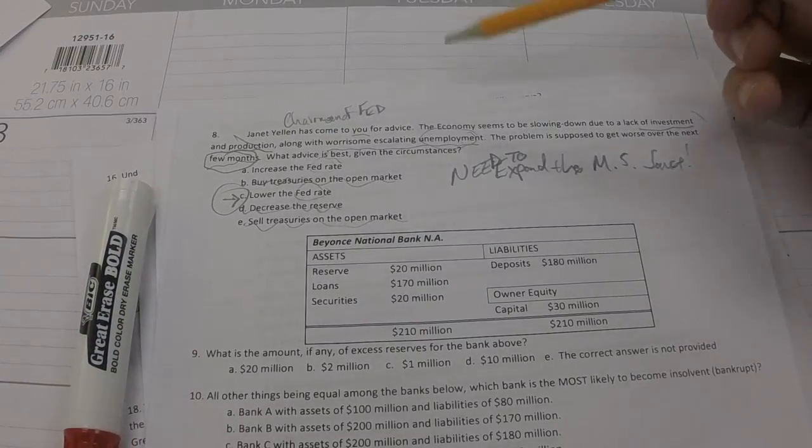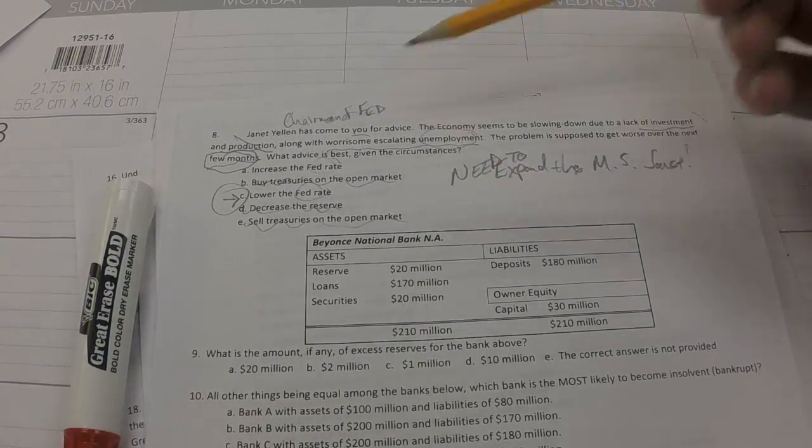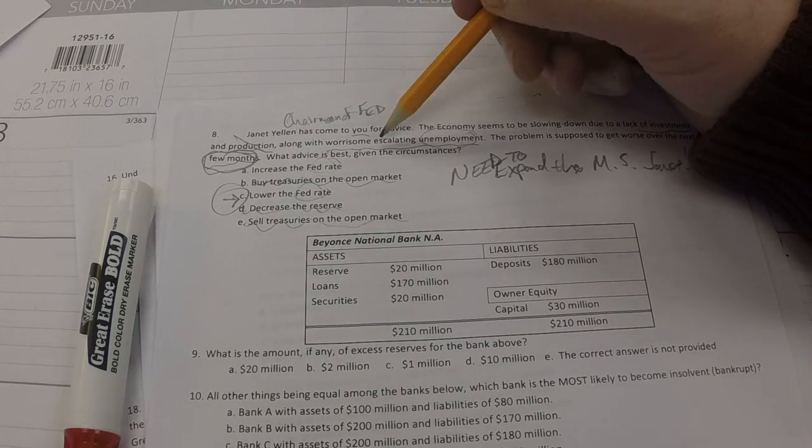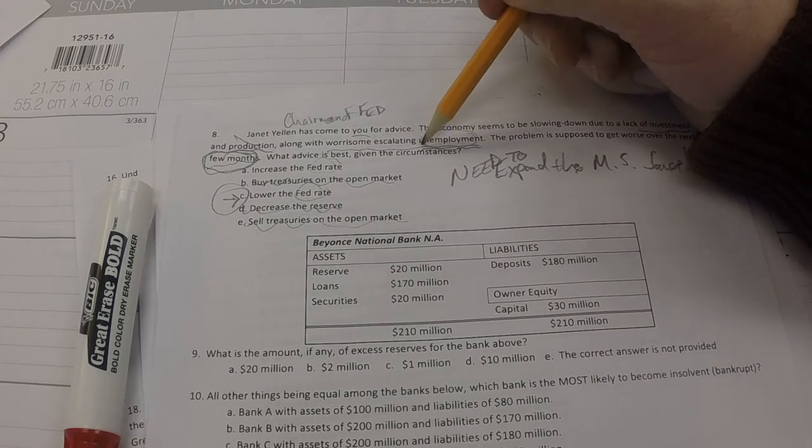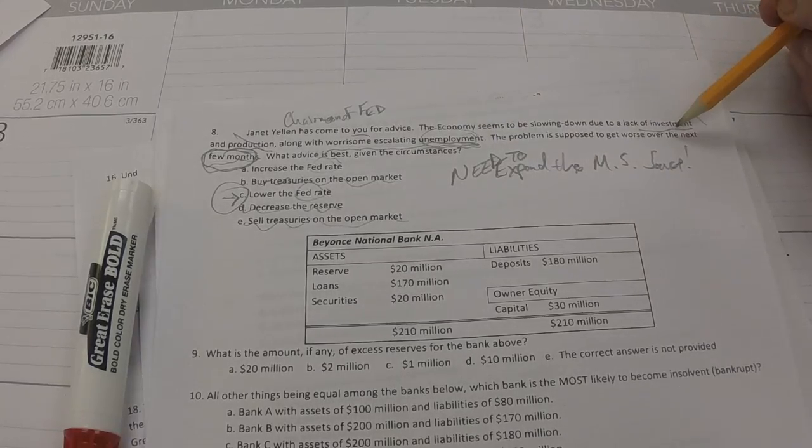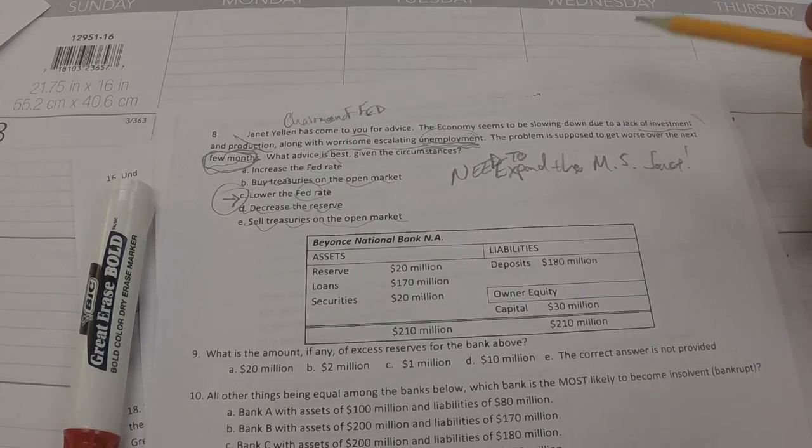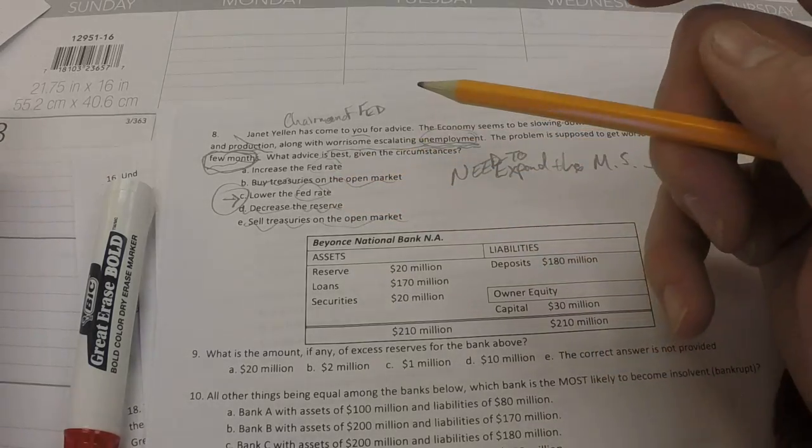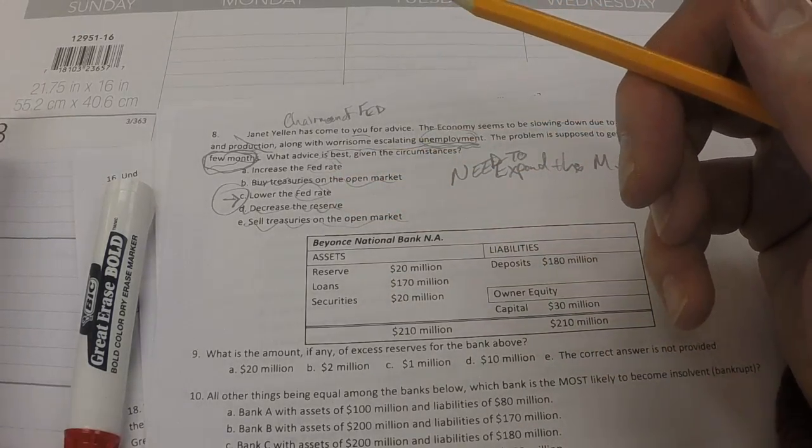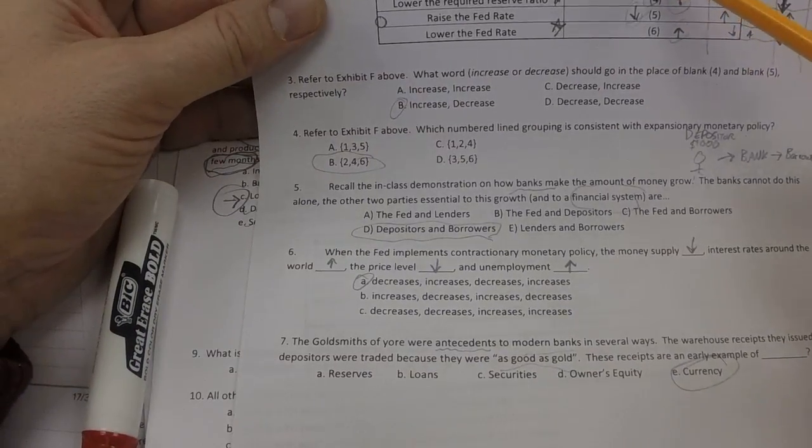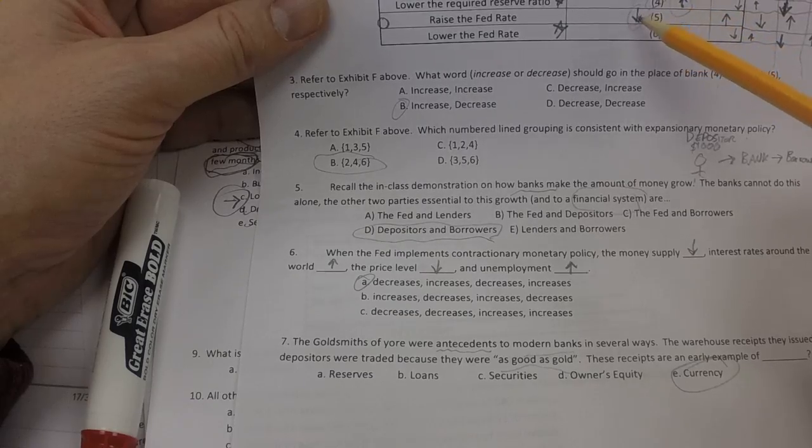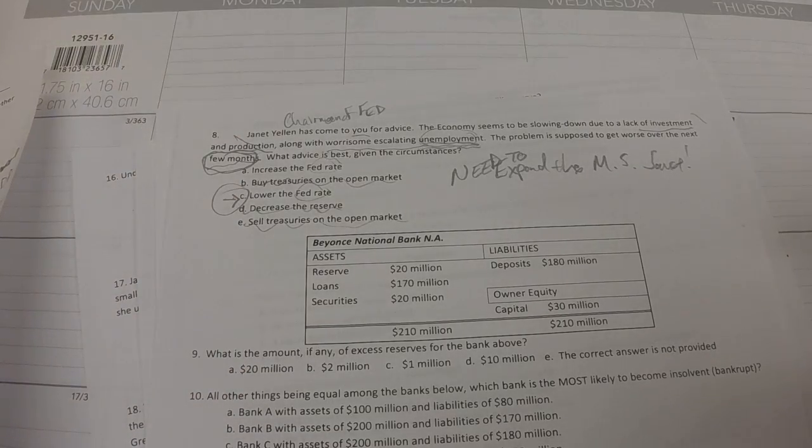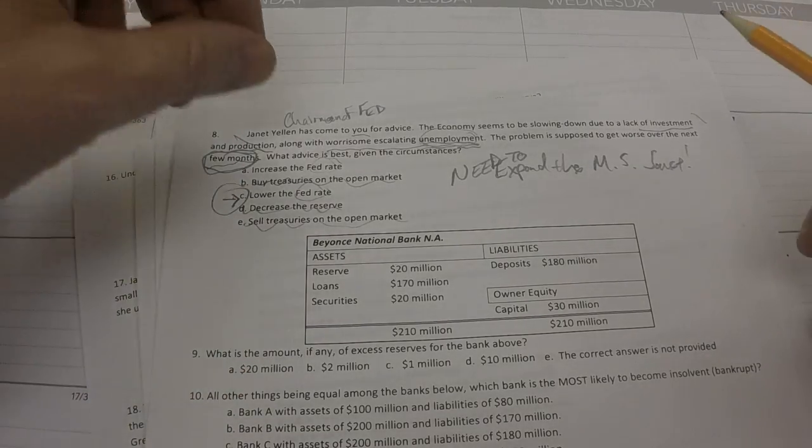And for that, we have three different tools, right? And expanding the money supply, if we come back here, buying treasuries will do it, lowering the required reserve ratio will increase the money supply, and lowering the Fed rate will do it. And given that the problem has to do with a few months, we're going to lower the Fed rate. Answer C. Hardest question on the test, but on the test, what I'll do is I'll ask something along these lines, but I'll either change this so it's not a few months, it's like an immediate concern, or I'll change this part that the worry is not too much unemployment, but prices are too high, or I'll change it to that production is too fast, somehow indicate that the economy is moving too fast and needs to be slowed down. In that case, we're going to have to engage in contractionary monetary policy, of which we have three choices there. The contractionary monetary policies are selling treasuries, raising the required reserve ratio, and raise the Fed rate. So you've got to look at the contextual clues, especially the economic indicators, just like the Fed does. And then you can give Janet some good advice.